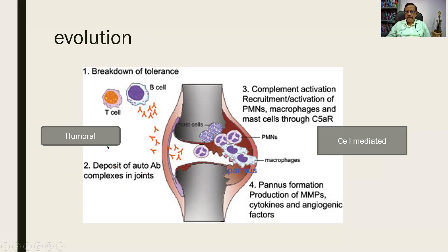There is activation of the complement and recruitment of inflammatory cells such as neutrophils, macrophages, and mast cells. These cells have a devastating effect and produce a lot of inflammatory mediators. In the background, a pannus is getting formed, covering the articular cartilage. This is both humoral and cell-mediated in nature.